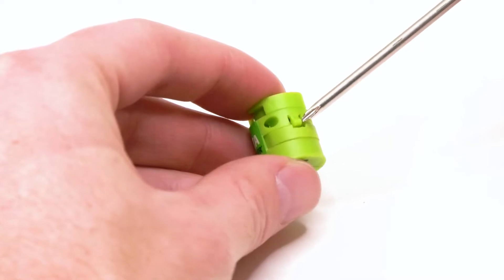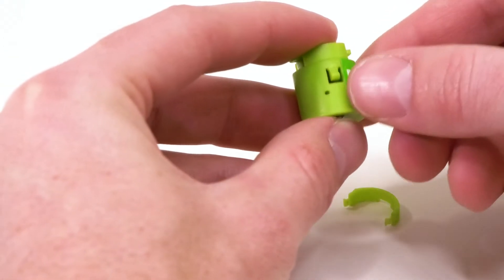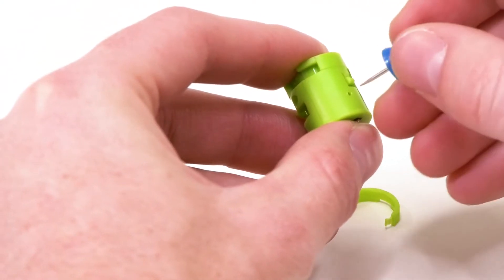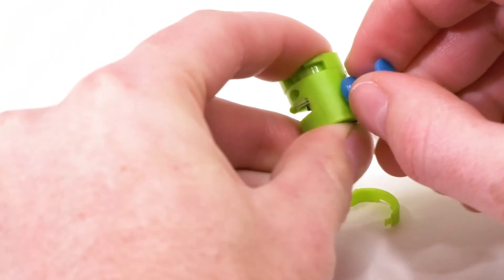Carefully pry open the battery compartment cover with a small flathead screwdriver or similar device. Use a paper clip or similar implement to push through one of the holes at the back to coax the battery out.